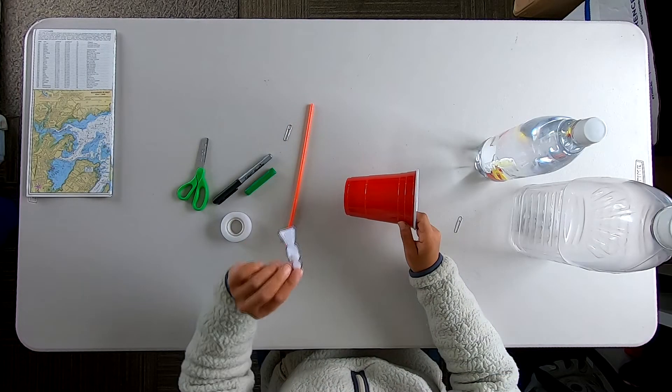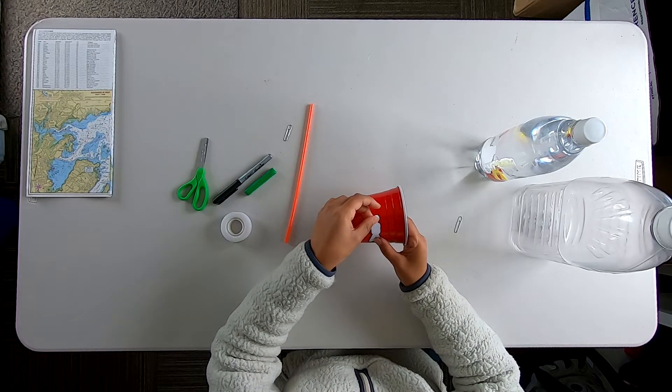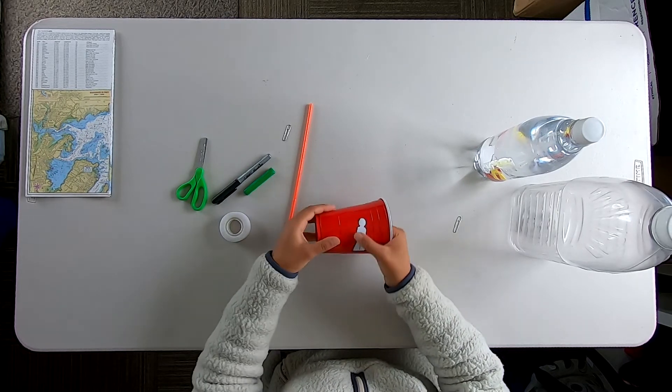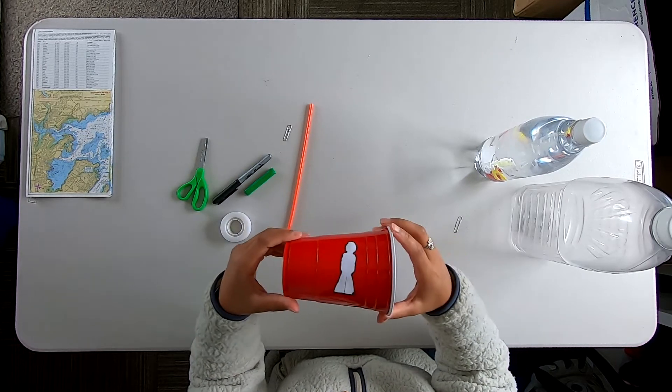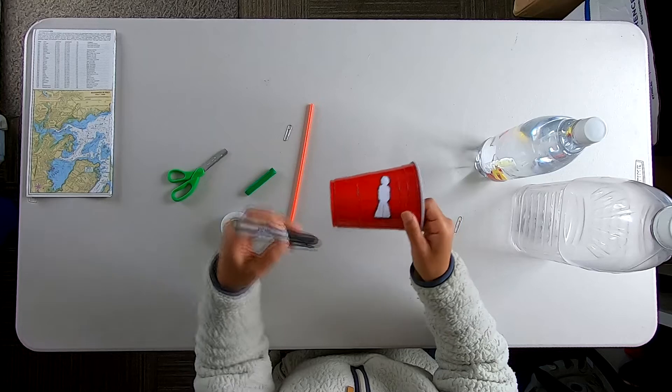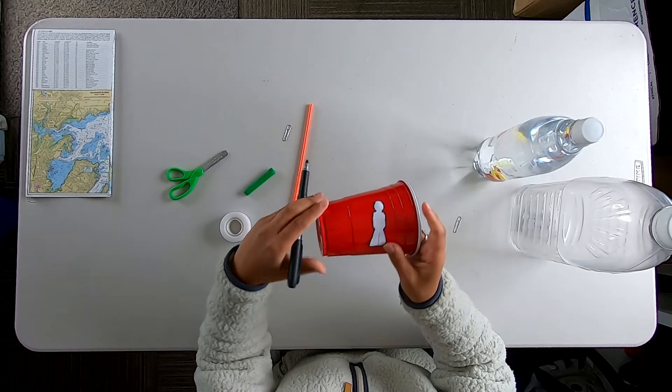Alright, to start off the activity we're going to go ahead and take our plastic cup and the cut out of our scuba diver. We're going to put a little bit of tape on the other side and stick it to our plastic cup. That way it doesn't move around while we trace it. I'm going to take my sharpie and trace the scuba diver.